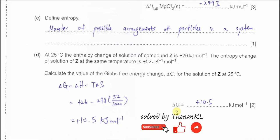Part C: define entropy. Entropy is the number of possible arrangements of particles in a system — it can be any system and can also be in energy form. For example, comparing solid and gas: solid has fewer arrangements, while gas has more arrangements because gas particles can move in all directions. Therefore, the entropy of a gas is higher, and that of a solid is lower.